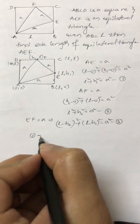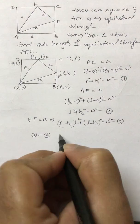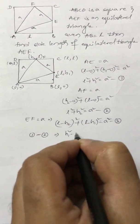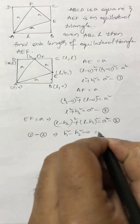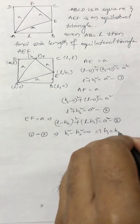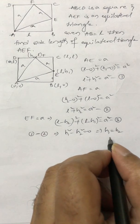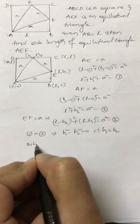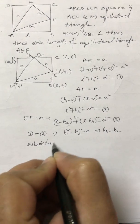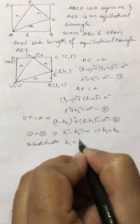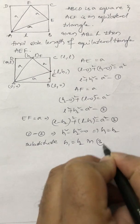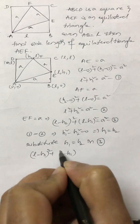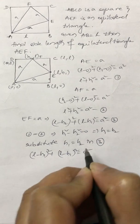From equations 1 and 2, if I subtract them, l² and l² cancel, and a² and a² cancel. So h1² − h2² = 0, which means h1 = h2. Now substitute h1 = h2 into equation 3.